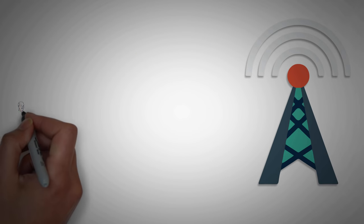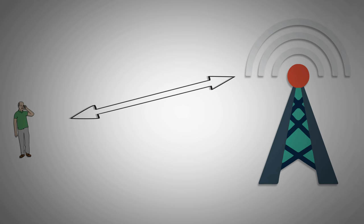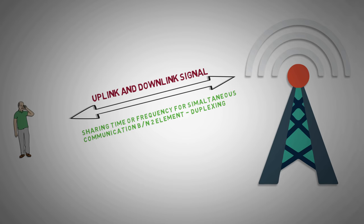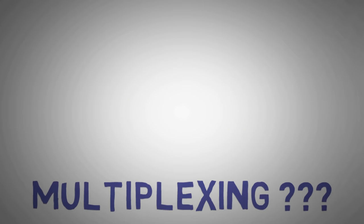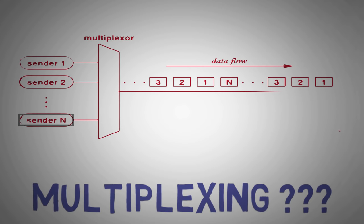In the last video we showed how two signals were combined over a common pathway in duplexing. So what exactly is multiplexing? Multiplexing is the process of combining multiple signals and transmitting them over a common channel.